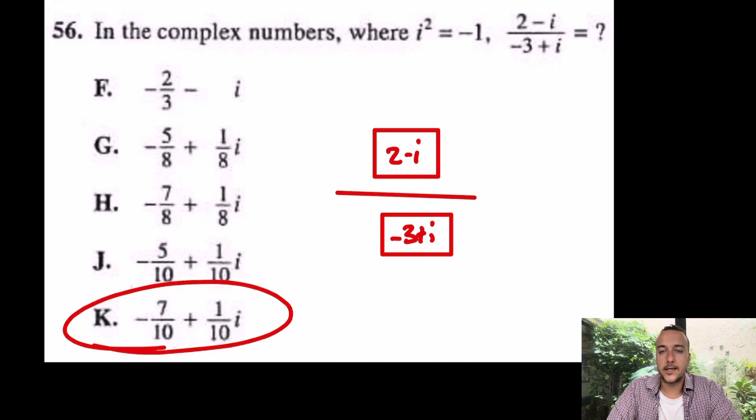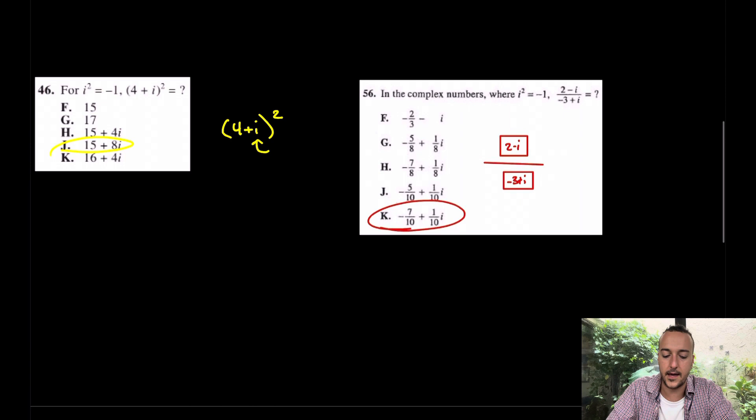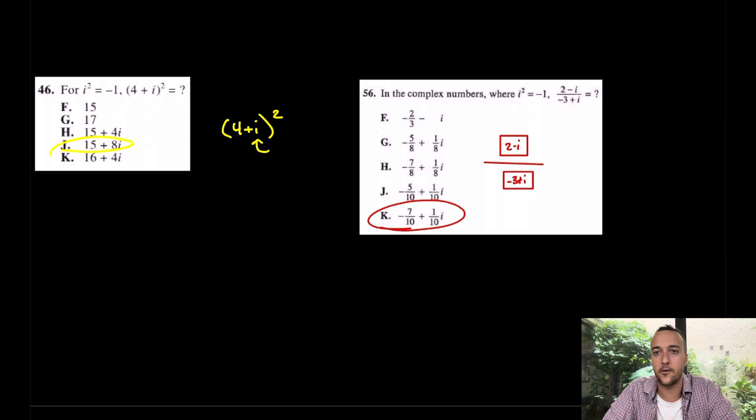This skill does show up on the ACT all the time, so please make sure that you are capable of doing it. And the beauty of this is, you only have to put it into this mode once, into A plus BI mode. Once it's in A plus BI mode, you never, ever have to play with it ever again, and really, it works for all levels of math. In other words, you never have to switch it back out of A plus BI. Just leave it there.